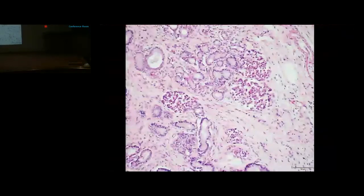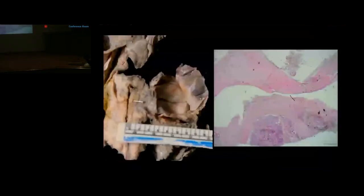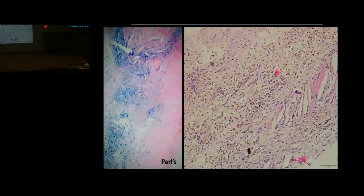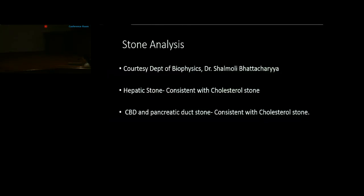The section from the pancreatic tail showed islets with no amyloid deposition. The wall of the pseudocyst showed no lining epithelium but hyalinization and fibrosis, with cholesterol clefts surrounded by pigment-laden macrophages and giant cells highlighted on Perl's stain indicating hemosiderin. Stone analysis of the multiple stones found in the hepatic duct, common bile duct, and pancreatic duct confirmed cholesterol stones.